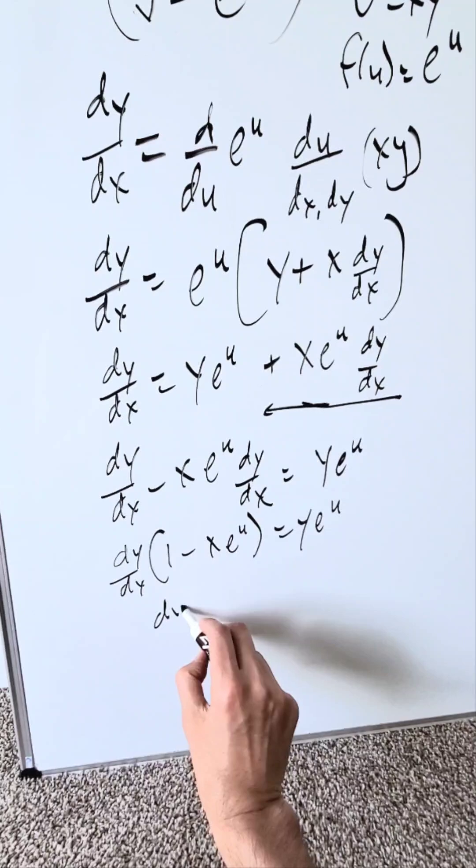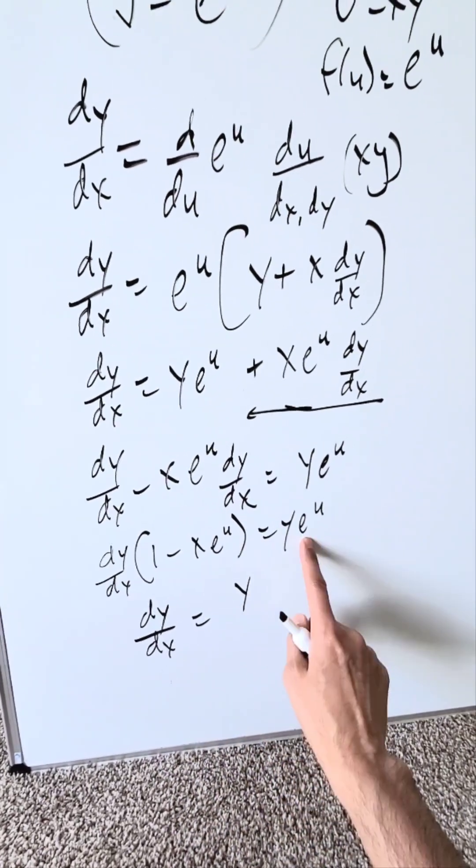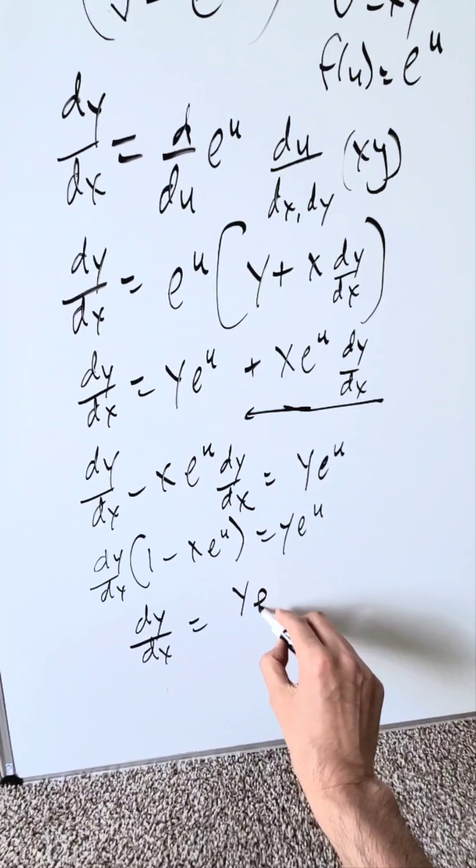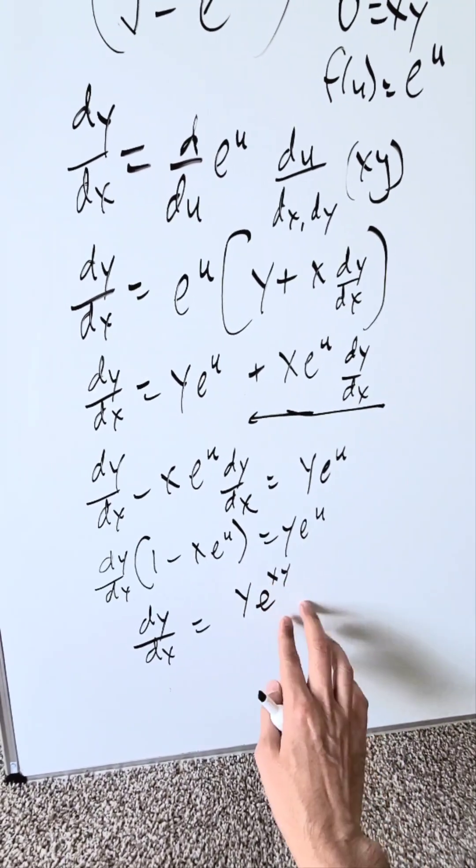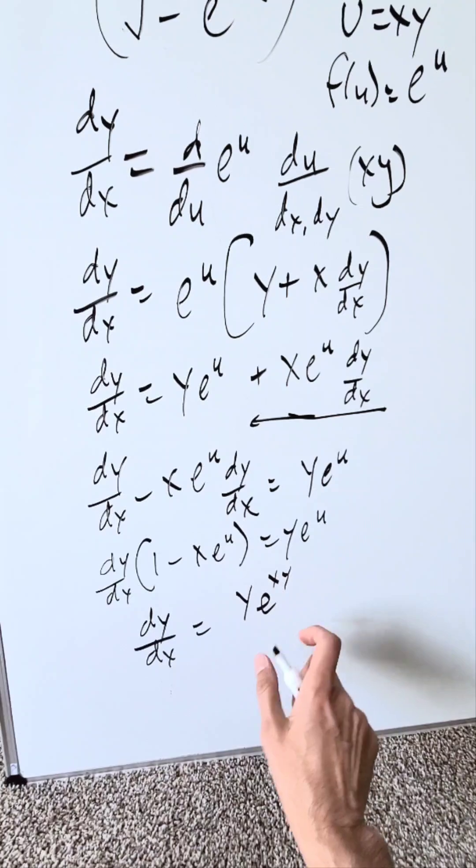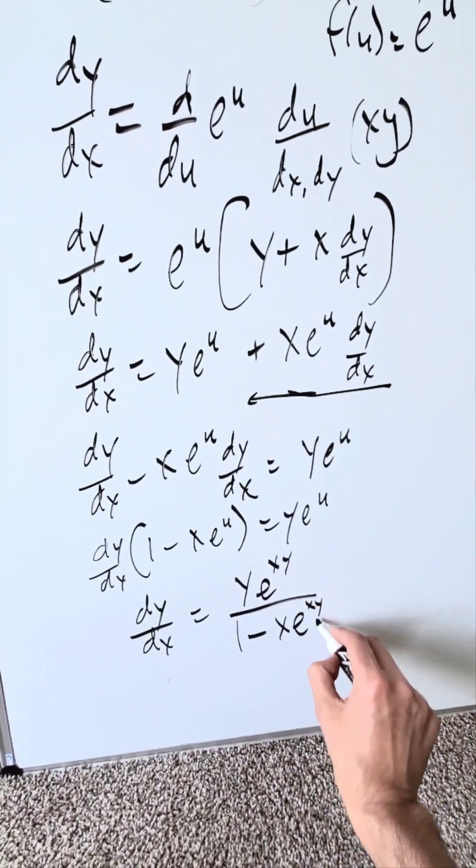dy/dx equals y times e to the u, and bring in your u substitution which is xy, so y times e to the power of xy. You know e to the u, u is equal to xy. You bring it in divided by 1 minus x times e to the u, but u is xy.